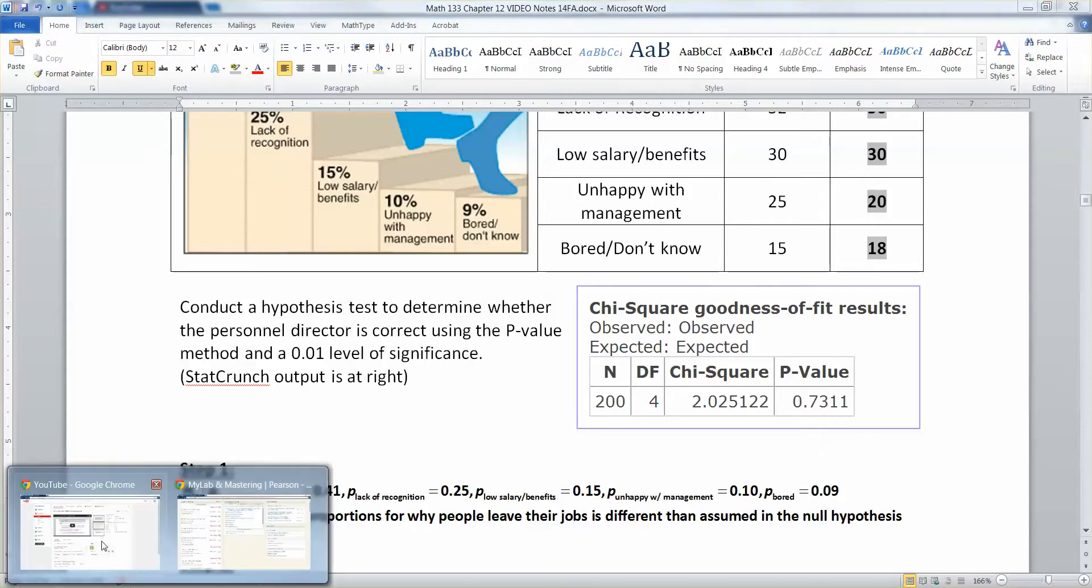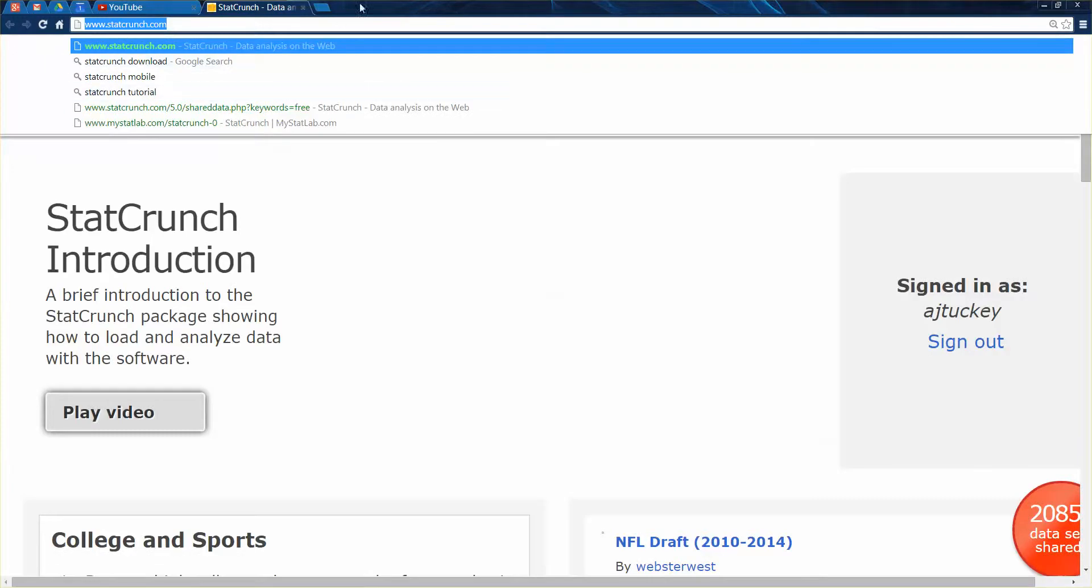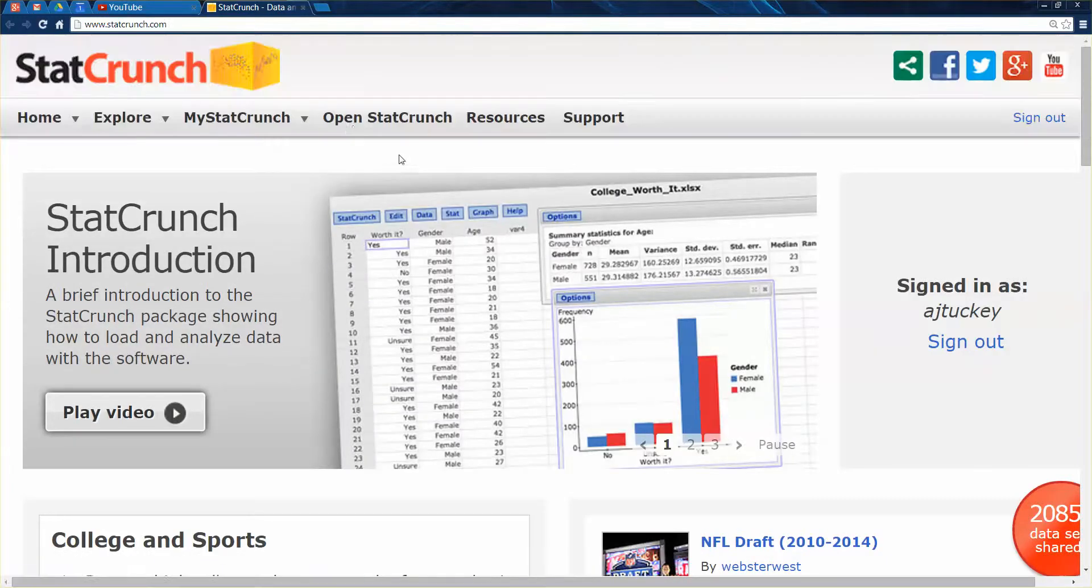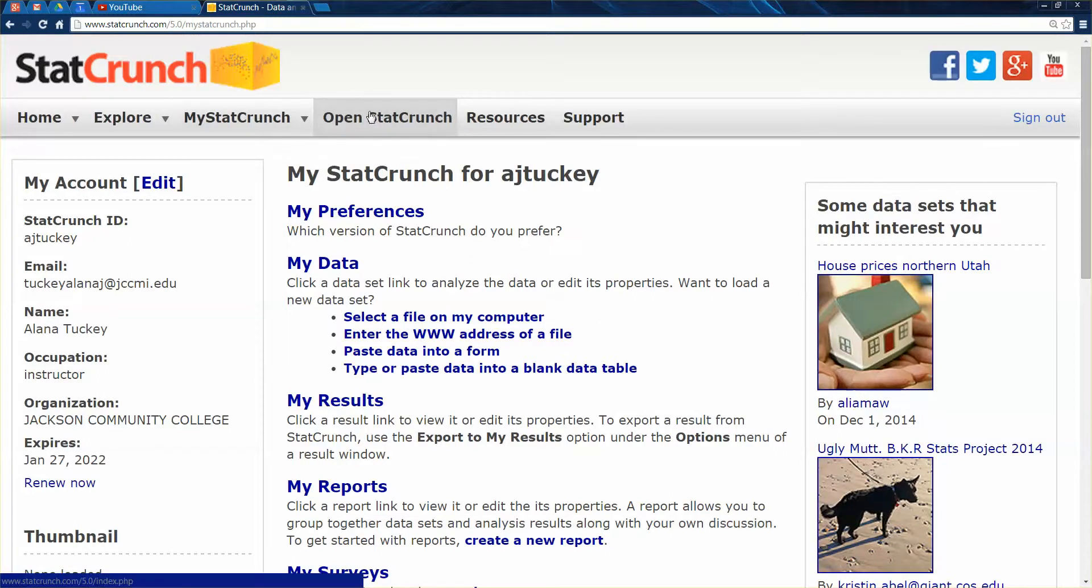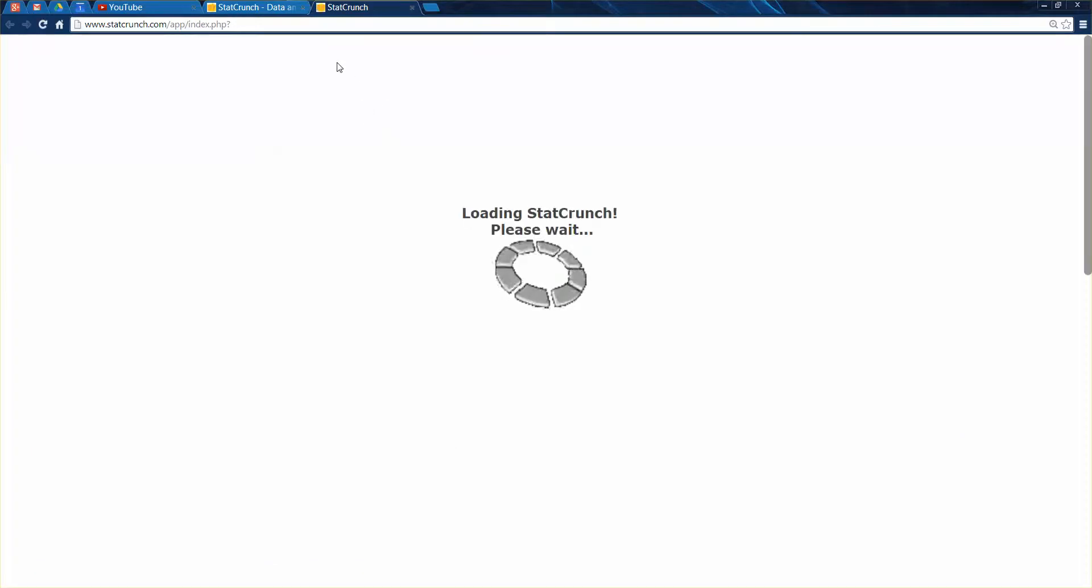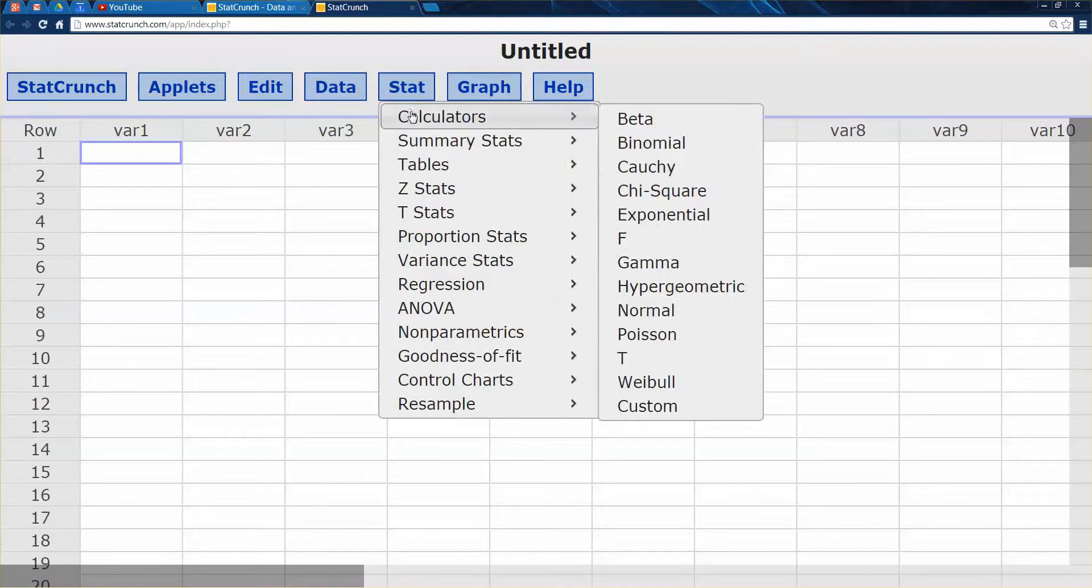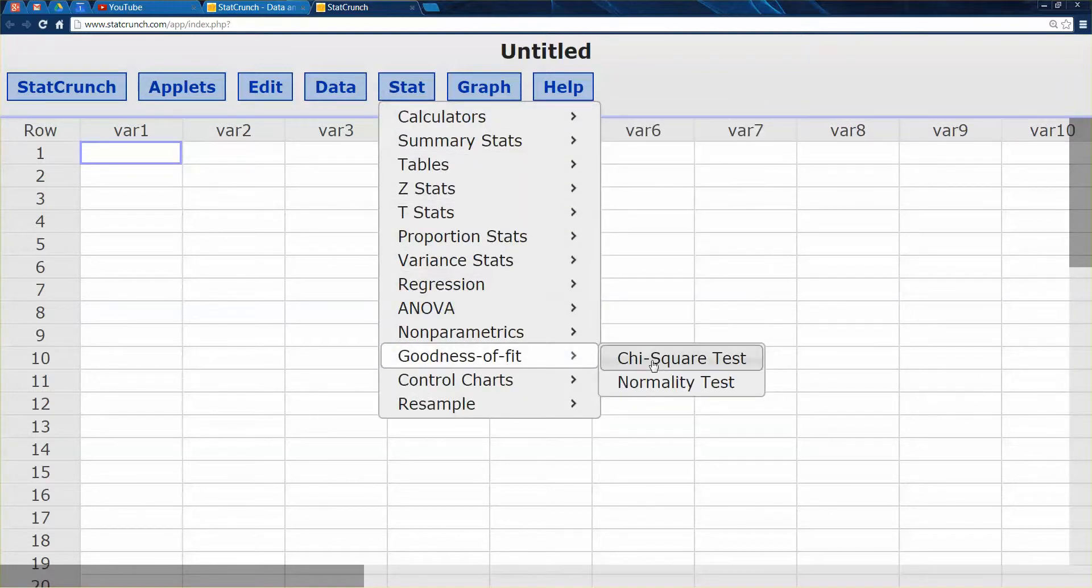Now real quickly let me show you how StatCrunch works, just so in case you have to use it you know how. StatCrunch is a website that you have available to you with the same username and password as MyMathLab because it's owned and run by Pearson, the company that runs MyMathLab. Here's StatCrunch right here. I just typed statcrunch.com and I'm already signed in. Let me sign out just so you can see it. You sign in with your username and password that you use for MyMathLab. Then you go to open StatCrunch and then stats, goodness of fit—see right there. You're doing a chi-square test.